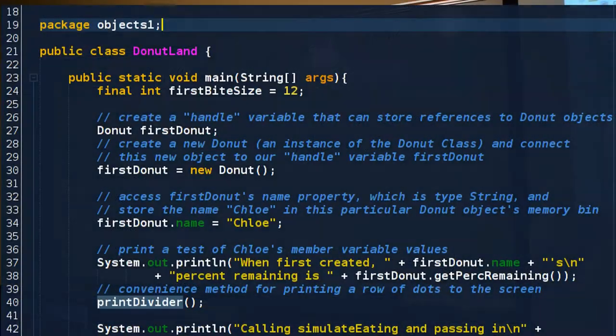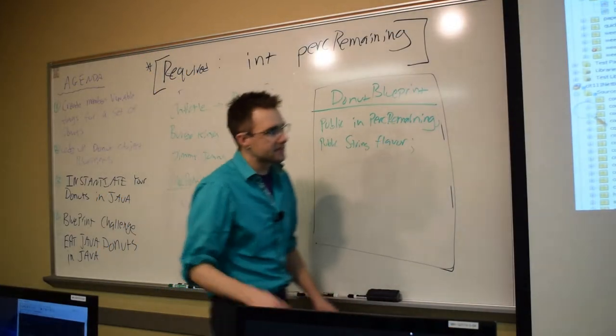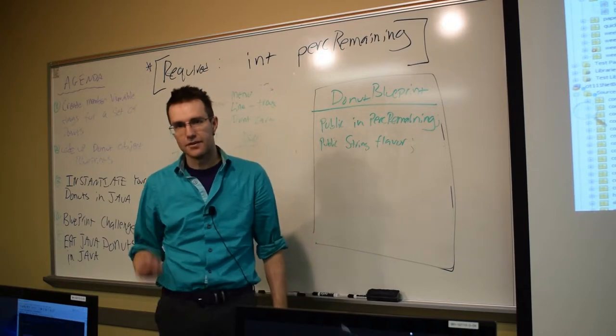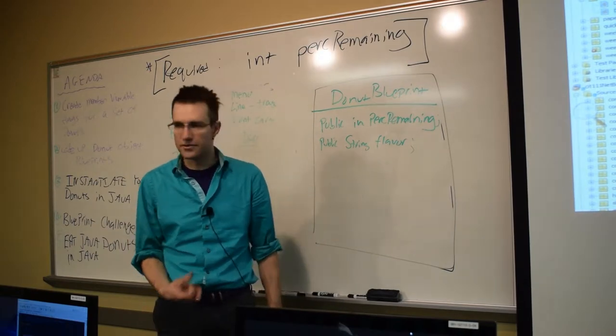Now let's go over to Donut Land. Donut Land we can think of as the class that contains the code that will use the blueprint to make an instance of a donut.